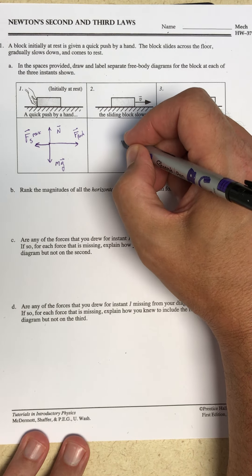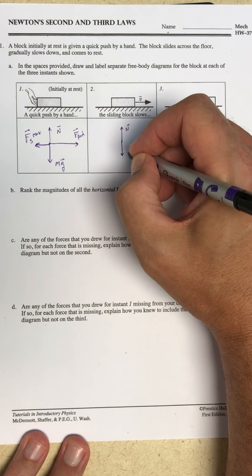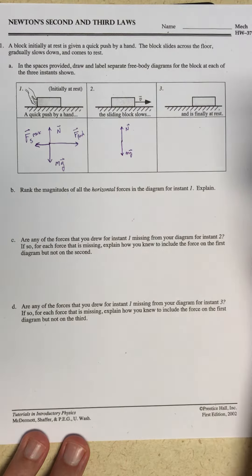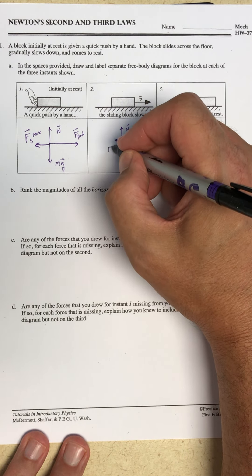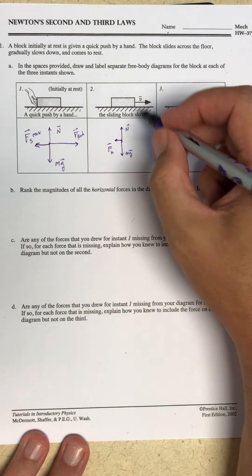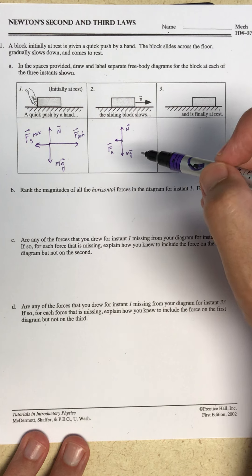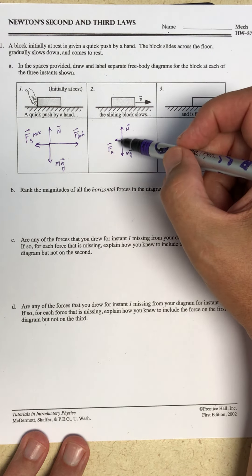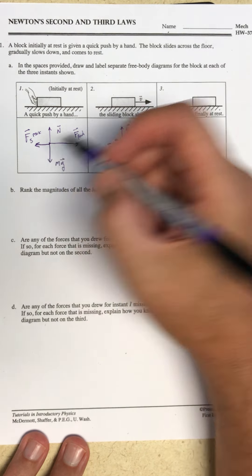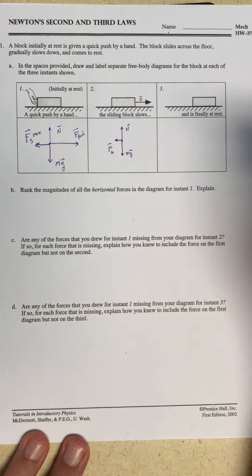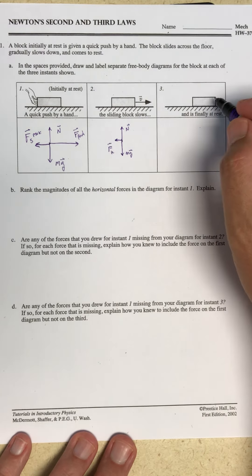As it is sliding, nothing has happened to the normal force or the weight of the block. There is a force of kinetic friction pointing to the left. I'm no longer pushing on the block, so that's gone. And I know that the force of kinetic friction, at least for normal coefficients of friction, is going to be a weaker force than the maximum force of static friction.